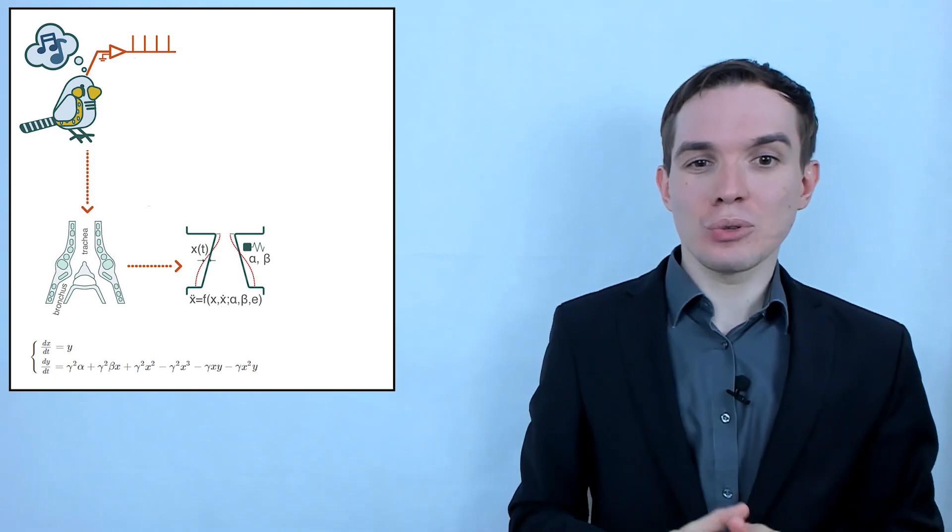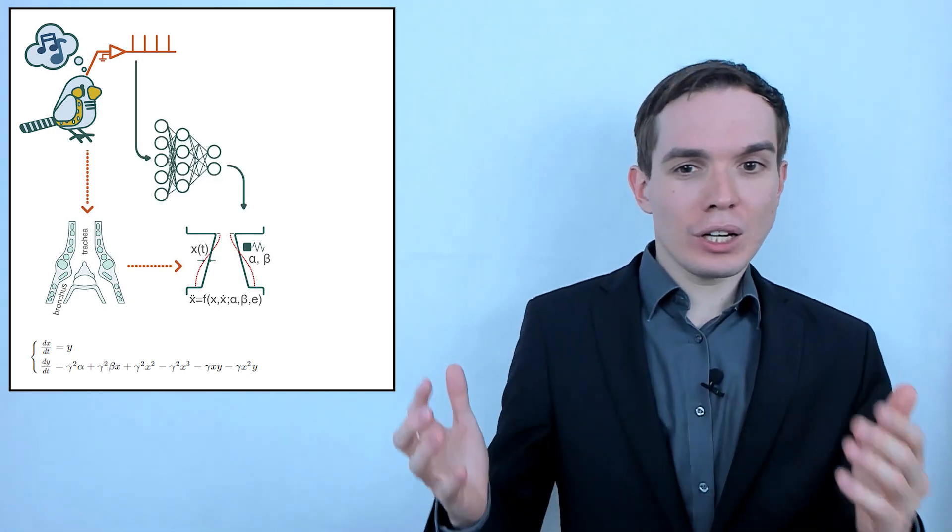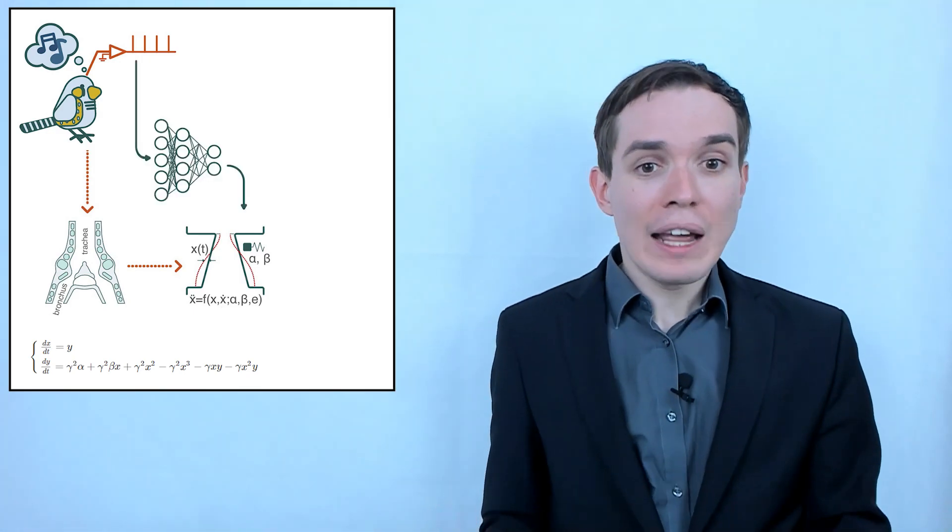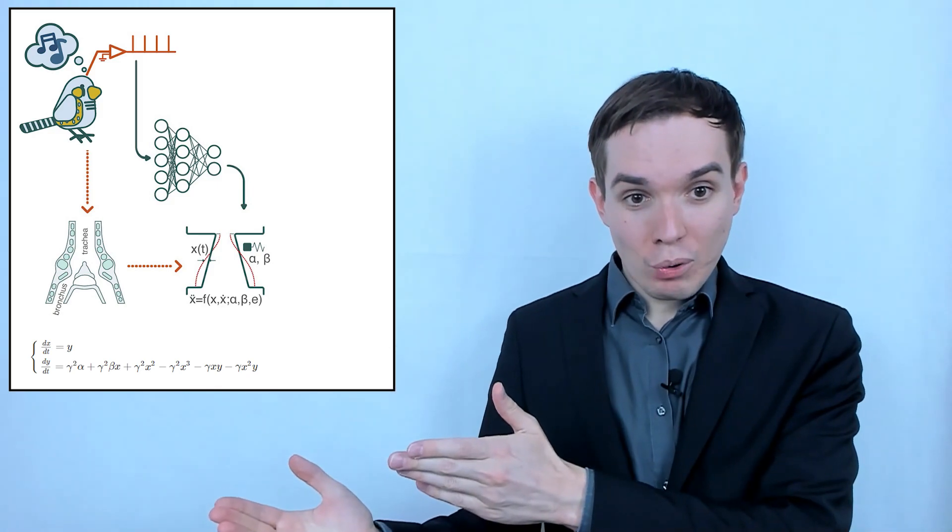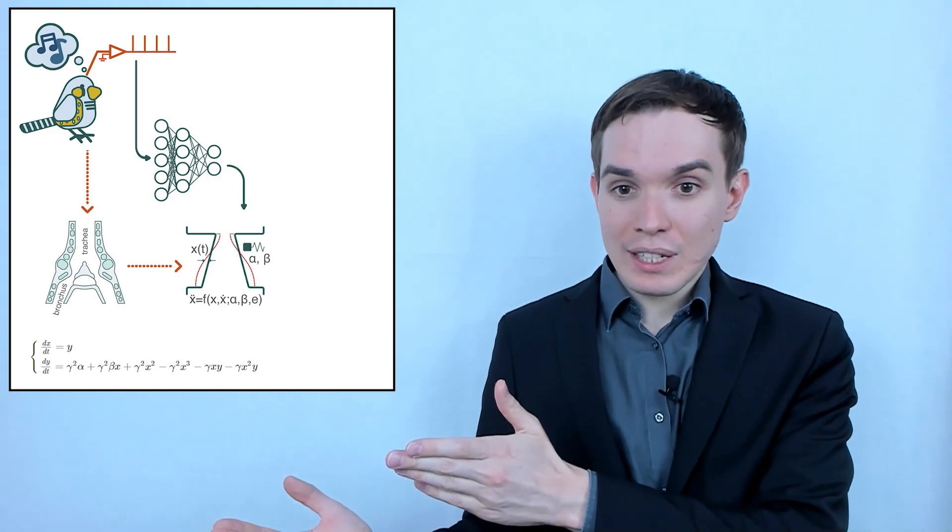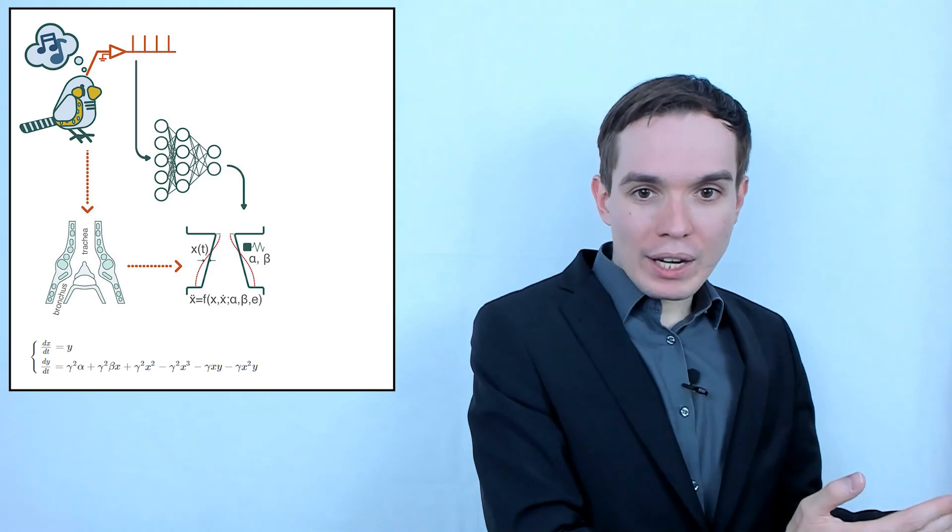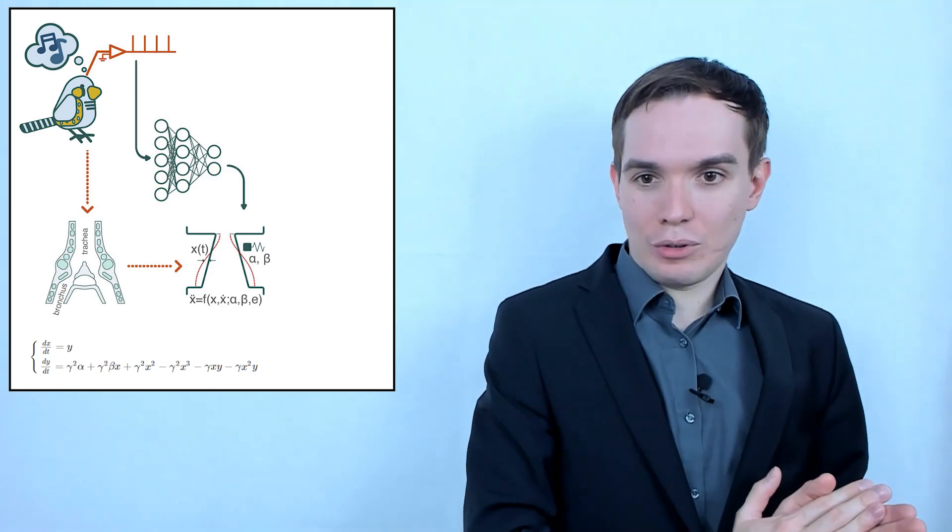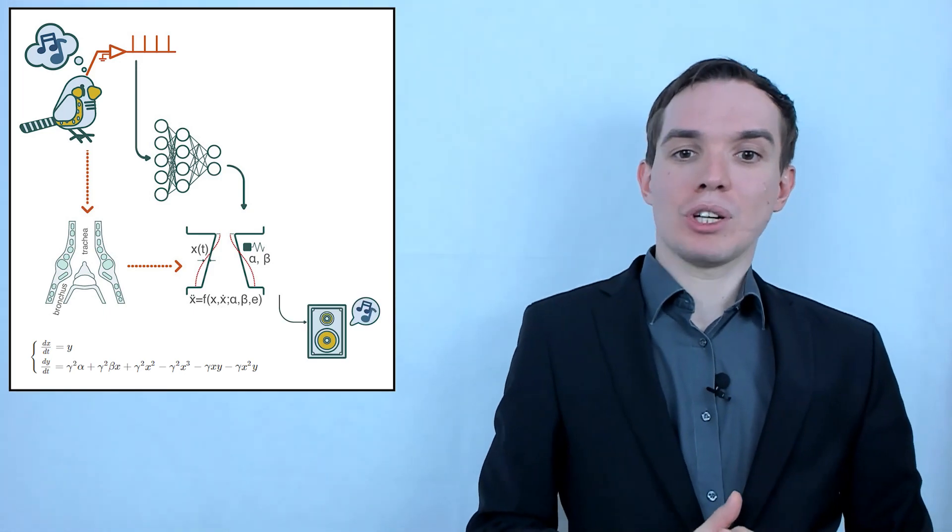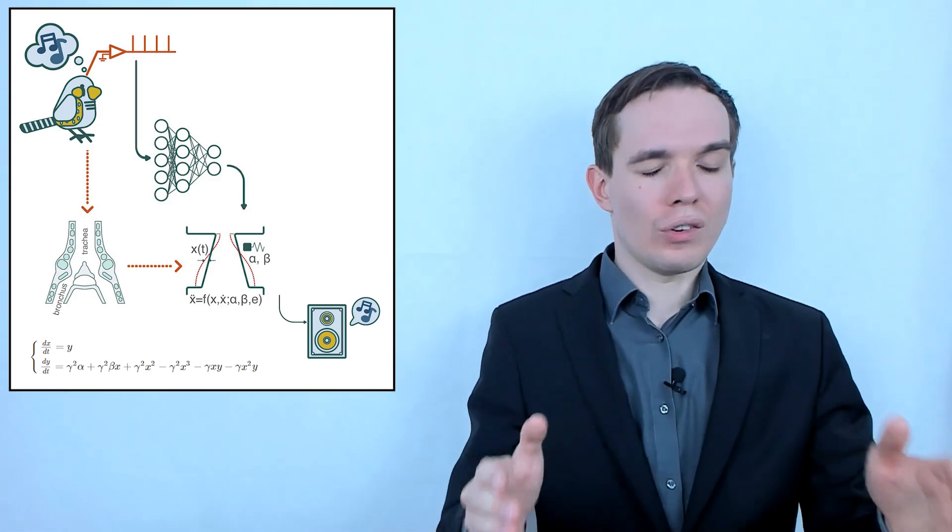In this step the scientists used a neural network, specifically a shallow feedforward neural network with one hidden layer that received the recording patterns of the brain activity as an input and provided values of the model parameters as an output. Then the estimated parameters were used to reproduce the song of the bird.